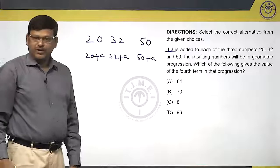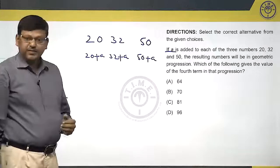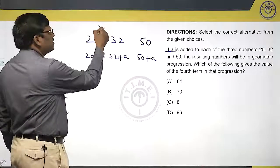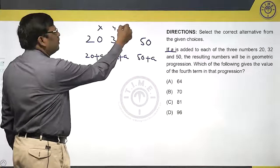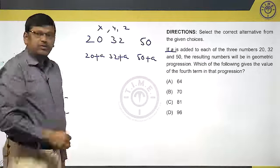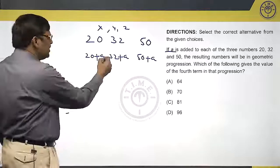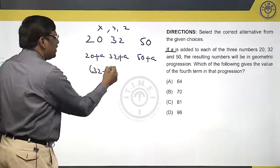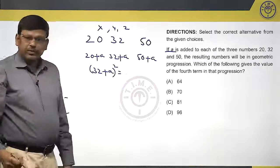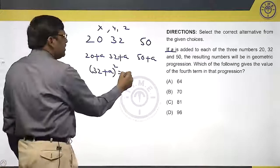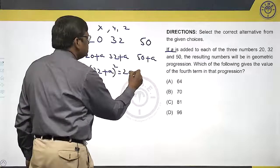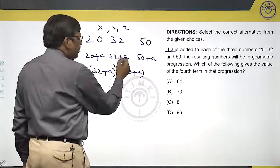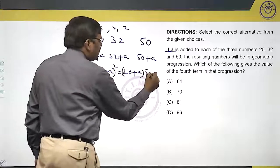They are in geometric progression. If they are in geometric progression, if X, Y, Z are in geometric progression, what we say? Y square is equal to X times Z. So what we can say is, 32 plus A whole square will be equal to 20 plus A into 50 plus A.